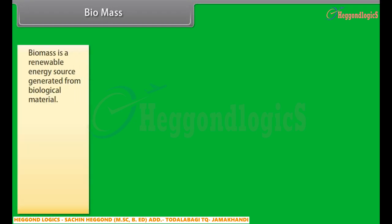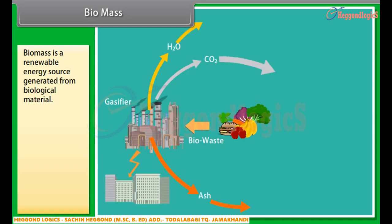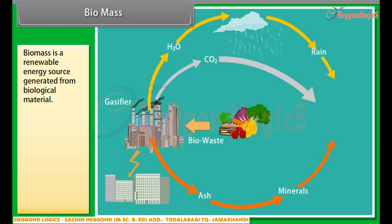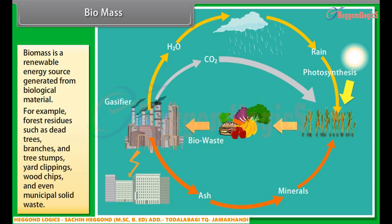Biomass is a renewable energy source generated from biological material derived from living or recently living organisms. As an energy source, it is either used directly or converted into other energy products such as biofuel. For example, forest residues such as dead trees, branches and tree stumps, yard clippings, wood chips, and even municipal solid waste. Biomass also includes plant or animal matter that can be converted into fibers or other industrial chemicals.